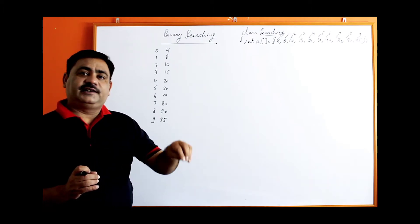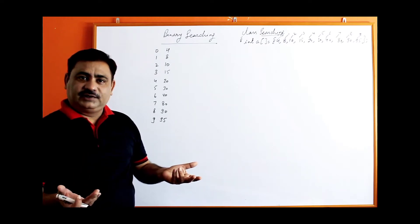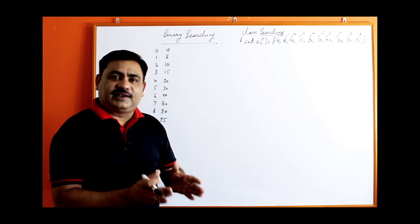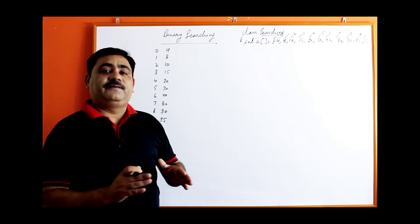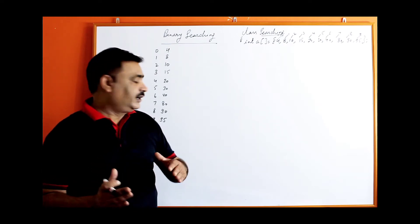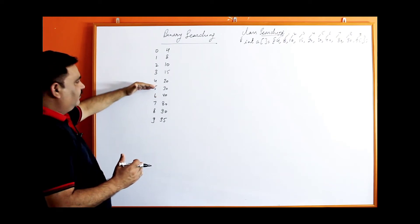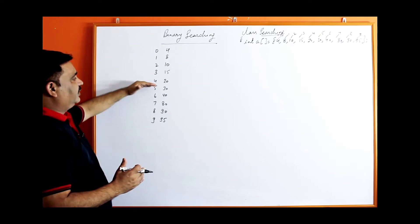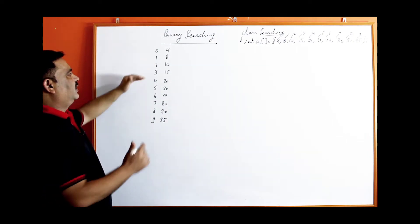If the value is present at the middle, then it is found. If it is not present, then it can be greater than or less than the middle value. If it is greater, you have to search in the upper half of the array. If it is smaller than the middle value, then you have to search in that half.